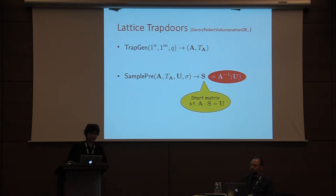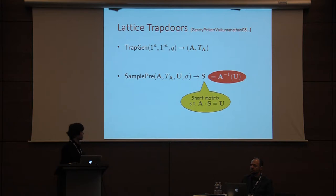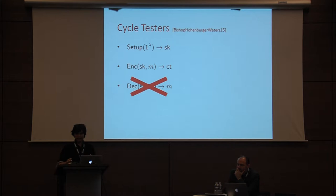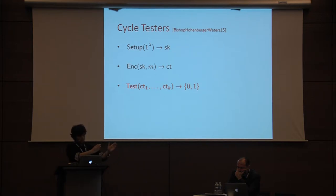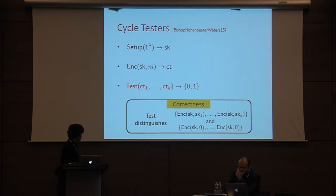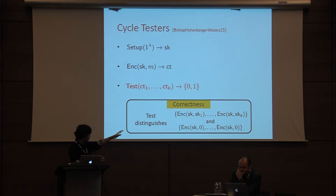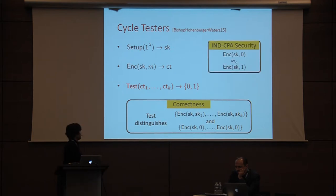Instead of directly constructing an encryption scheme, we'll be building what are called cycle testers. Cycle testers are basically an encryption scheme except they don't have a decryption algorithm — instead they have a test algorithm. The test algorithm takes a bunch of ciphertexts and outputs zero or one, telling you whether the ciphertexts correspond to an encryption of a key cycle or some garbage. Correctness requires the test algorithm to distinguish between encryptions of a key cycle (encrypting each bit of the secret key for its position) and encryptions of all-zero strings. The security requirement is identical to n-CPA security: you should not be able to distinguish between encryption of zero and one.